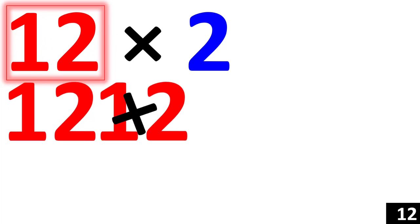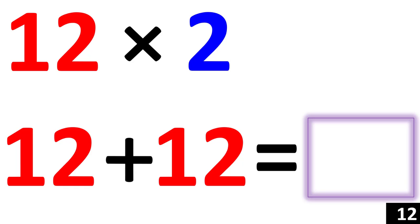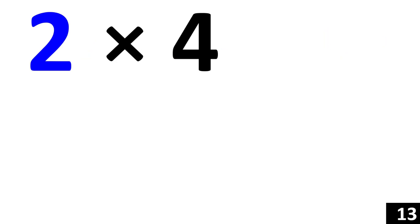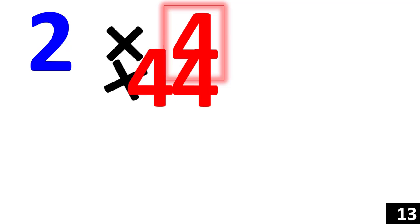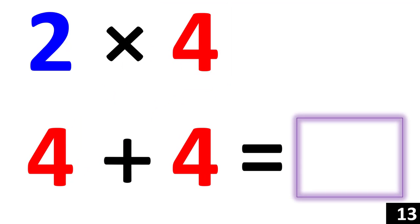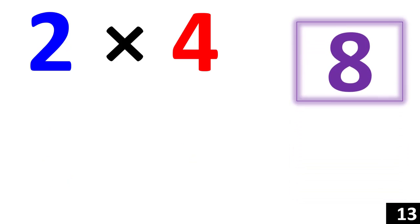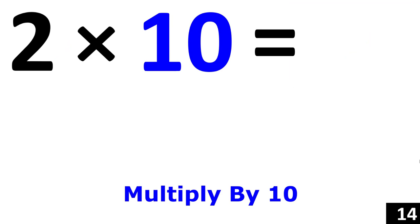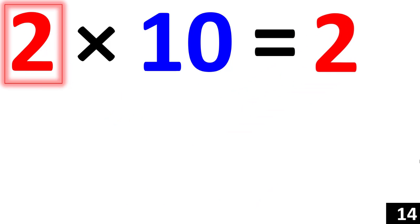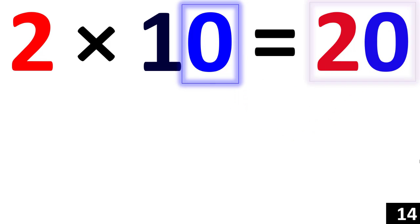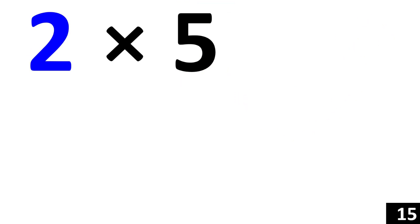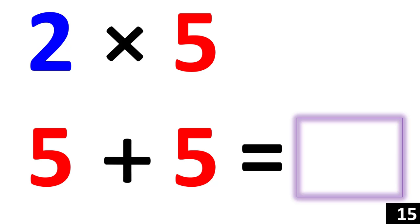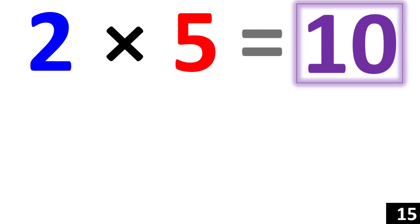12 times 2 is the same thing as 12 plus 12. 24. So 12 times 2 equals 24. 2 times 4 is the same thing as 4 plus 4. 8. So 2 times 4 equals 8. For 2 times 10, we just use the rule of 10. So 2 times 10 is a 2 with an added 0. 20.